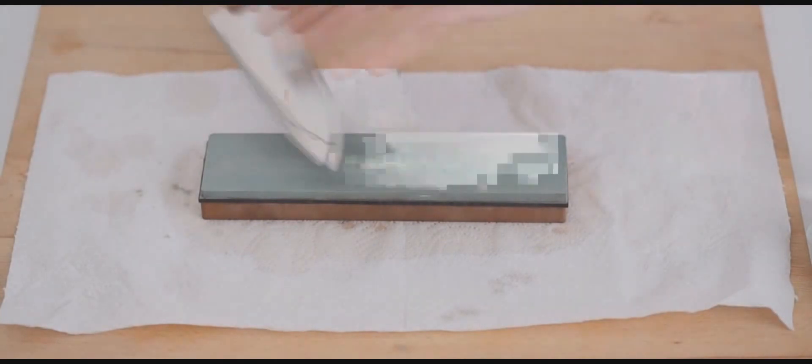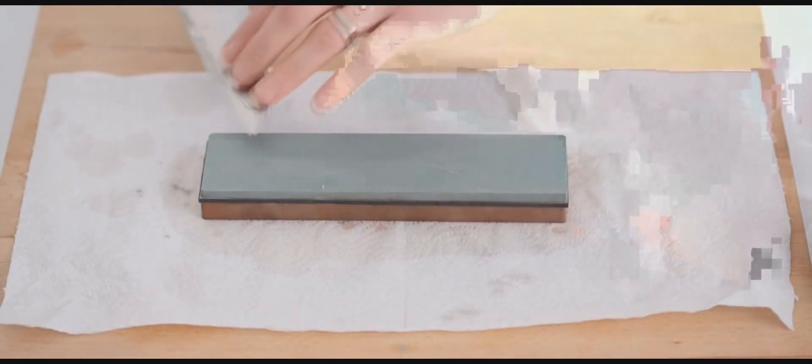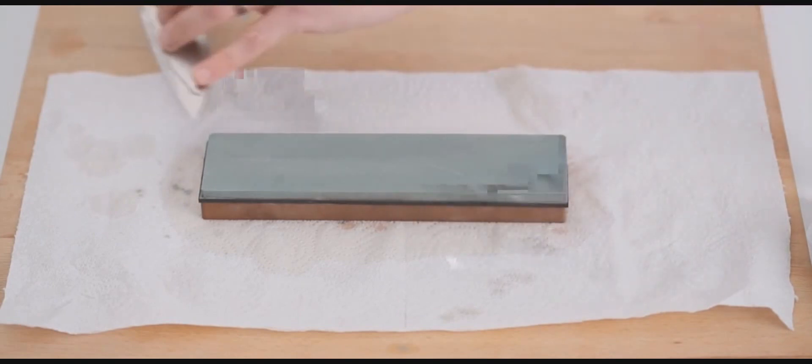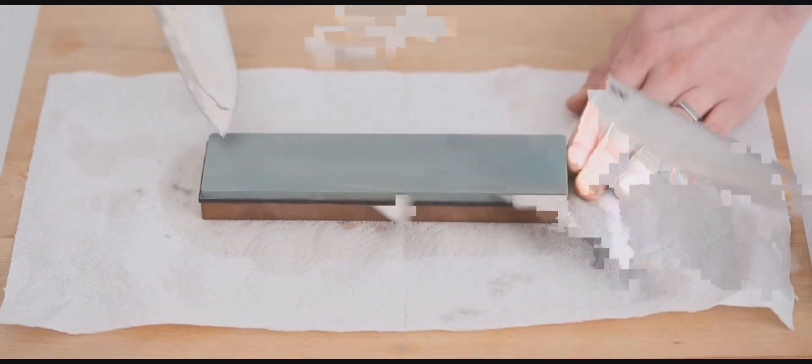So after you've done quite a few strokes on one side, turn over and again, on the backside of the blade, run from the tip right to the heel. Keep the angle constant.